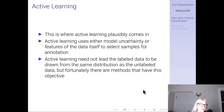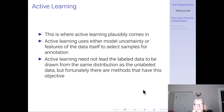This is where active learning plausibly comes in. Active learning uses either model uncertainty or features of the data itself to select samples for annotation. Active learning may not lead the labeled data to be drawn from the same distribution as the unlabeled data, but there are methods that have this objective.